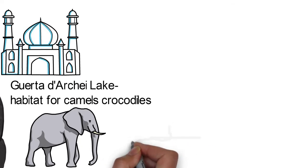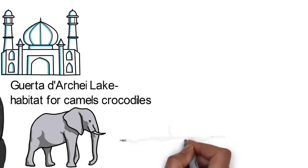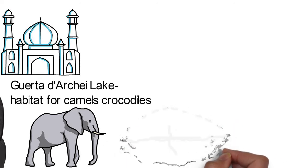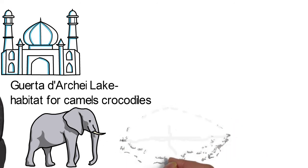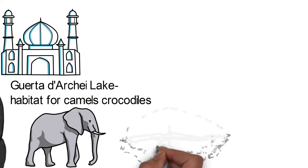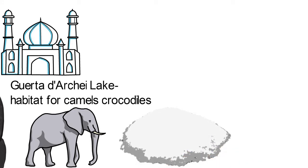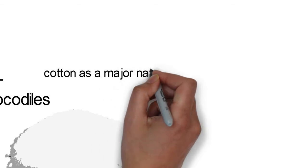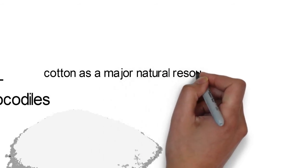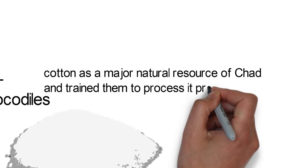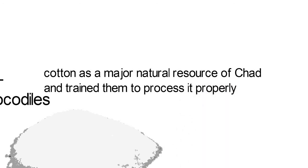Chad is rich in mineral resources like gold and limestone. Others include cotton, crude oil, natron, uranium, gravel, kaolin, and salt. The French later discovered cotton as a major natural resource of Chad and trained them to process it properly.